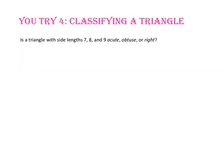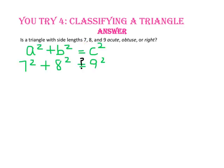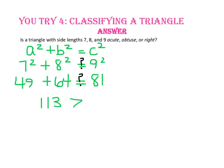Pause the video and do you try number 5. Is a triangle with side lengths 7, 8, and 9 acute, obtuse, or right? Let's use 9 in place of c, and 7 and 8 for a and b. 7 squared is 49, 8 squared is 64, and 9 squared is 81. 49 plus 64 is 113, and since 113 is greater than 81, the triangle is acute because a squared plus b squared is greater than c squared.